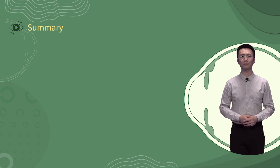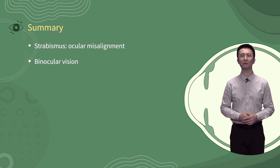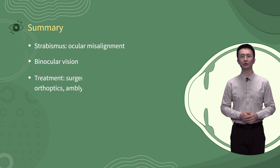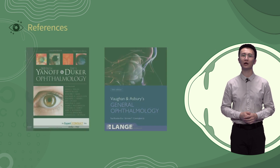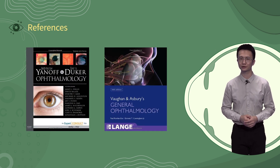In summary, any ocular misalignment such that only one eye views the object of regard is called strabismus. Treatment aims at ensuring the best possible visual acuity and binocular visual function and realigning the eyeballs. Here are the references. Thank you very much for joining us.